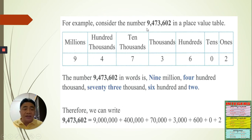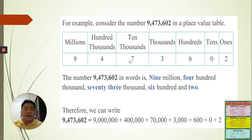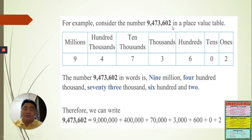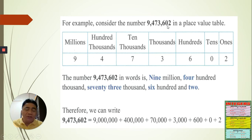Nine is in the millions place — nine million. Four is in the hundred thousands place — four hundred thousand. Seven is in the ten thousands place — seventy thousand. Three is in the thousands place — three thousand. Six is in the hundreds place — six hundred. Zero is in the tens place, and two is in the ones place. Without zero, you cannot read it as six hundred. If you write only six and two, that is sixty-two, not six hundred. That is why zero is a placeholder — we put zero in the tens place to push six into the hundreds place.